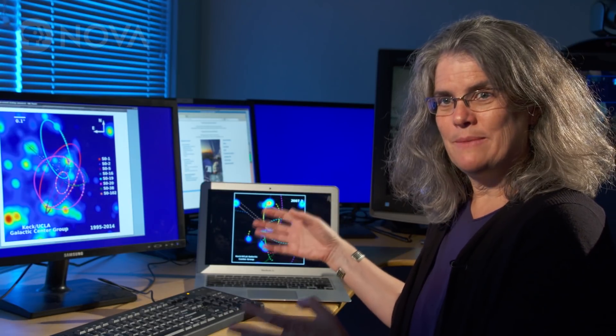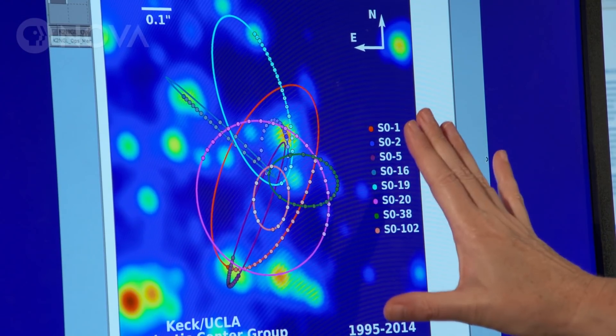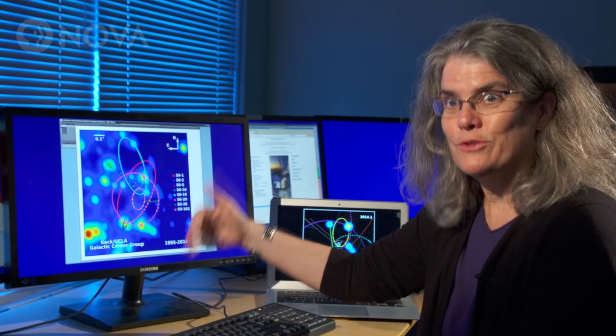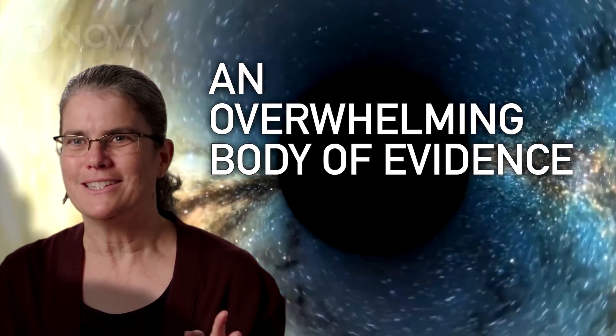Four million times the mass of the Sun. This is the proof that there's a supermassive black hole at the center of our galaxy, and that supermassive black holes really do exist. I think we have people convinced.